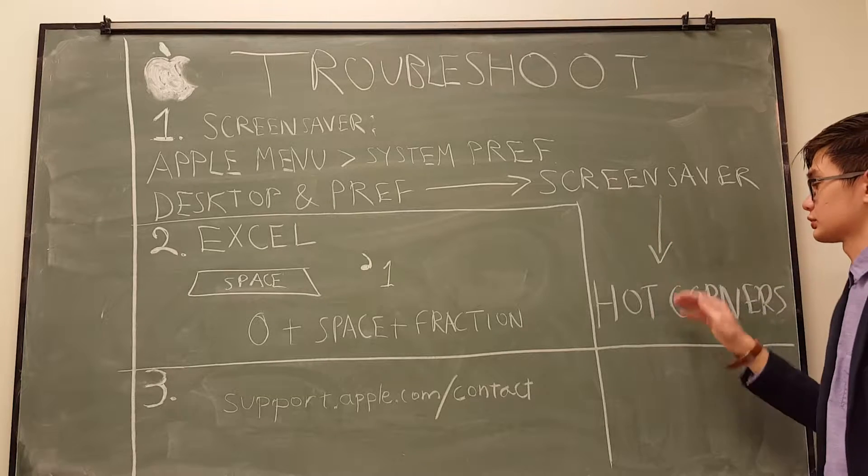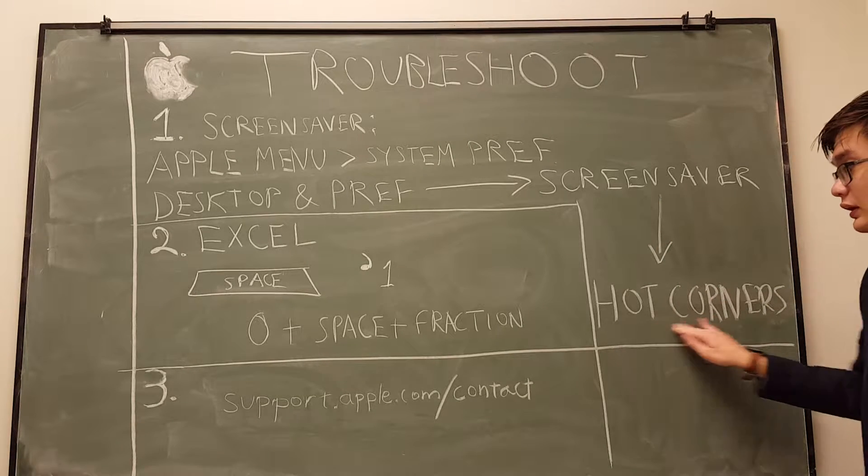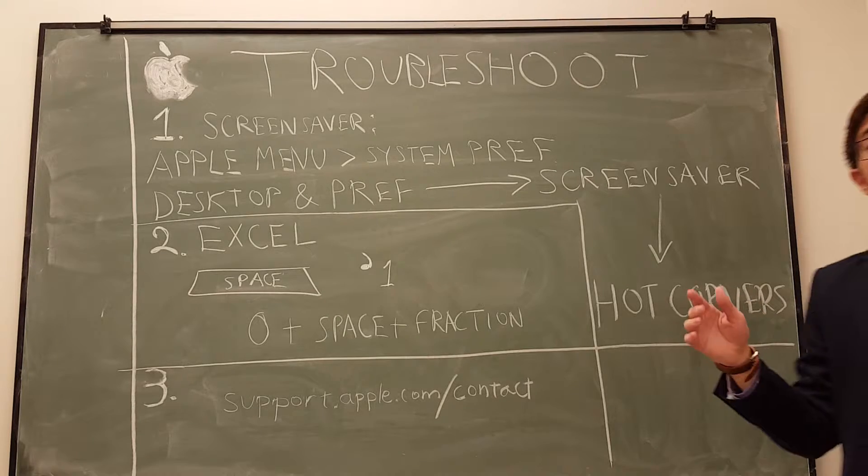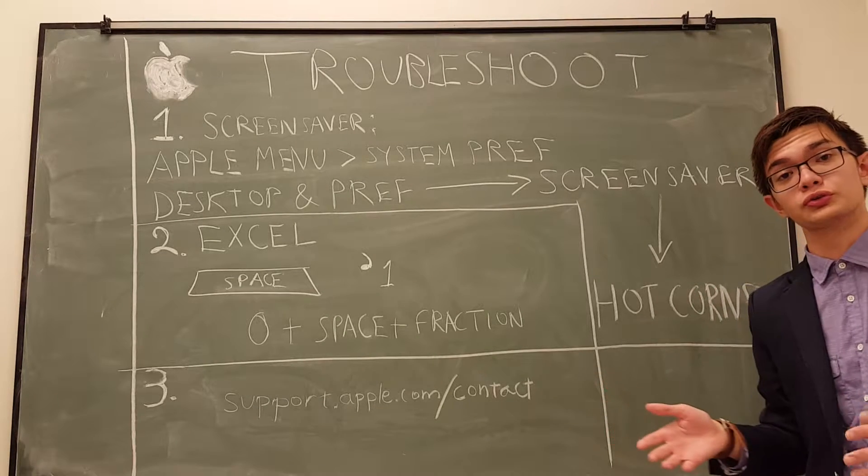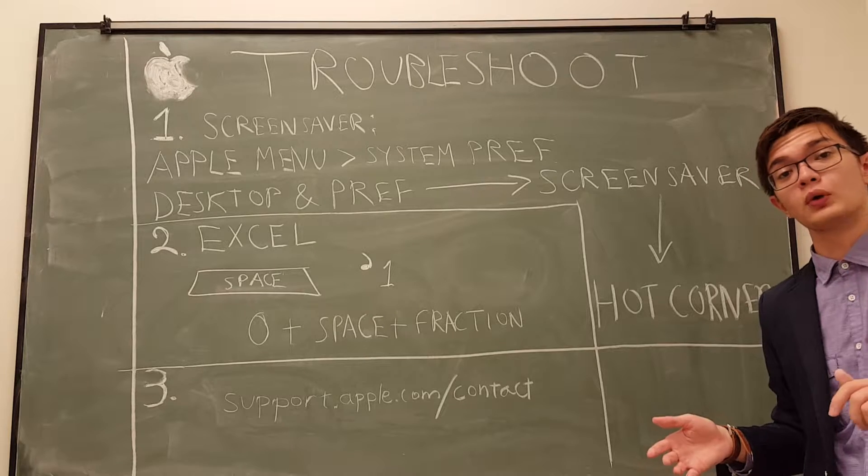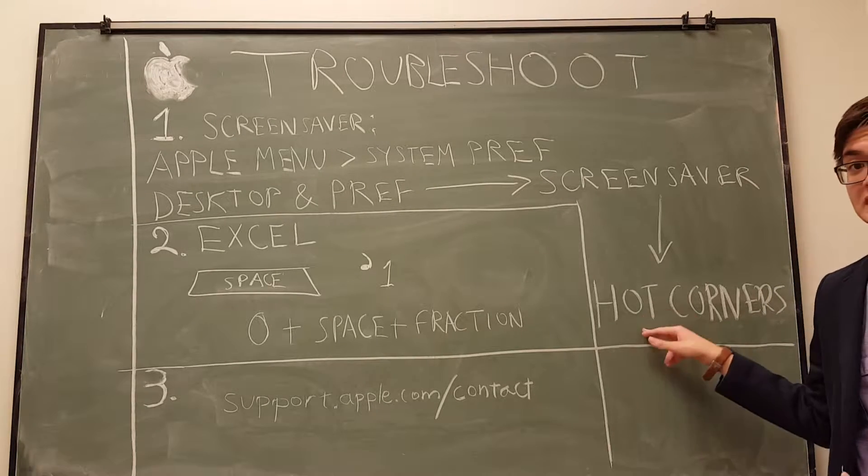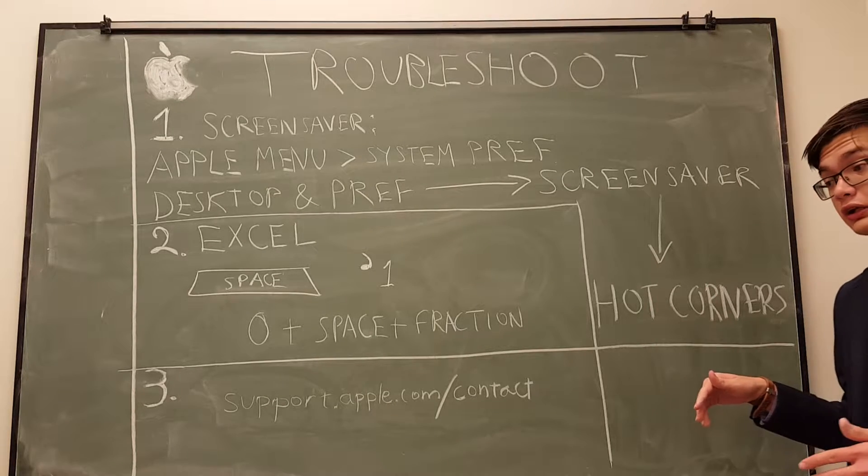Now once you click this, you will see this button. This is the problem. This is the function that allows users to move the mouse to a certain part of the screen which would automatically put the computer to sleep mode. Once you click on this, you can click disable to remove that issue entirely.